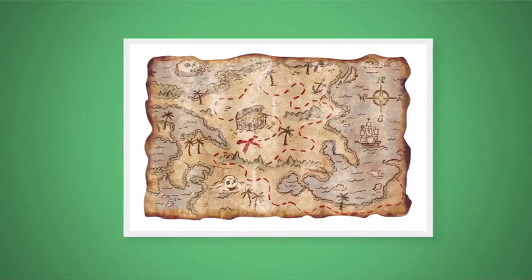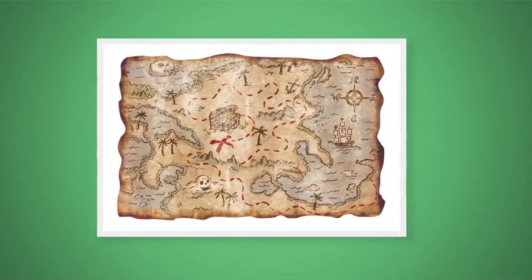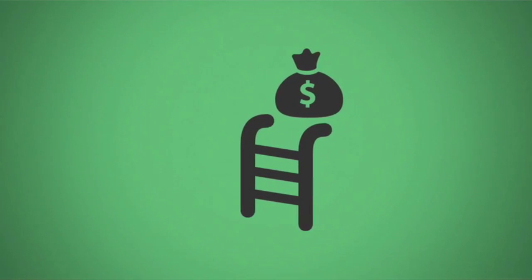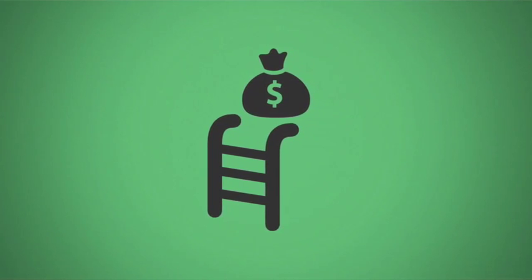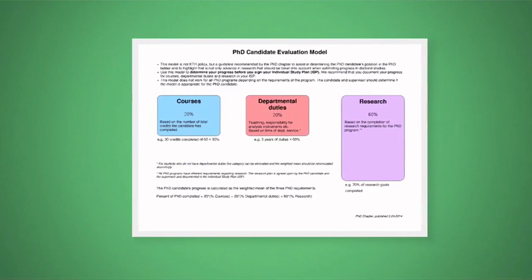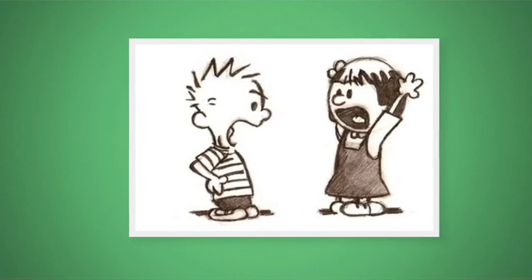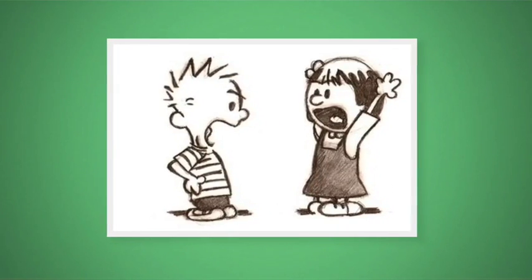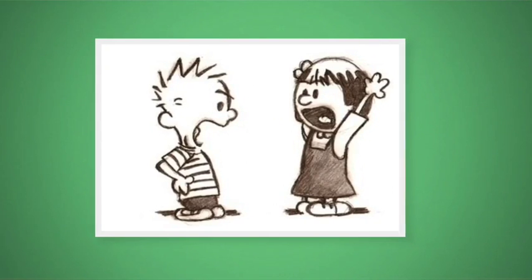Second, you can think of it as a guide to help you plan your research, education, and department service during your PhD studies. So why is the ISP important? First, it shows how much work you have completed, and it can determine when you advance up the PhD salary ladder. We have a model on the PhD Chapter website to help you figure out when you should advance up the ladder. Second, if a conflict ever arises between you and your advisor, the ISP serves as a legal document to help resolve the problem. This is why it's extremely important that both you and your advisor fill out the ISP together.